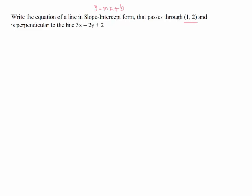That passes through this point here, 1 and 2, and is perpendicular to this line. So this is a reference line. If two lines are perpendicular, what is the relationship between their slope?